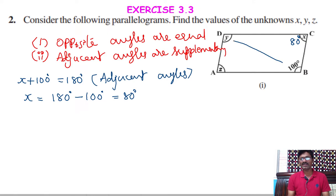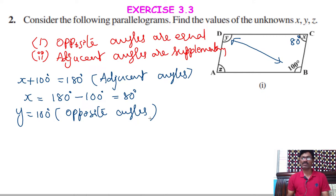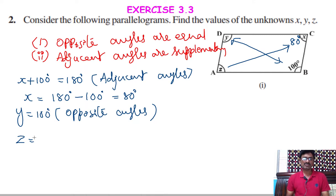After knowing X equals 80, we can find Y and Z. The angle 100 and angle Y are opposite angles, and opposite angles are equal in a parallelogram. So Y equals 100 degrees. Similarly, Z equals X because those two are also opposite angles. X is 80 degrees, so Z equals 80 degrees. The reason is opposite angles.